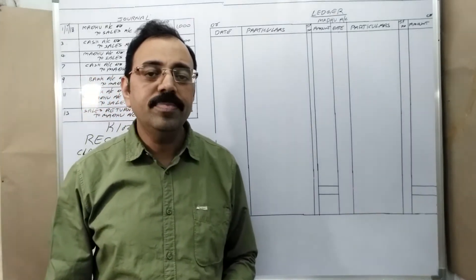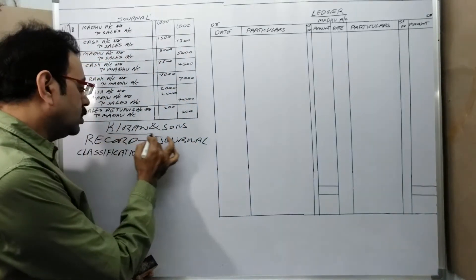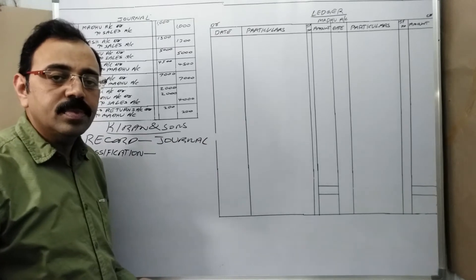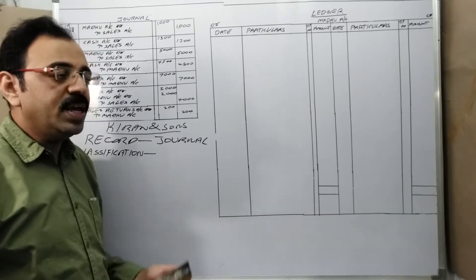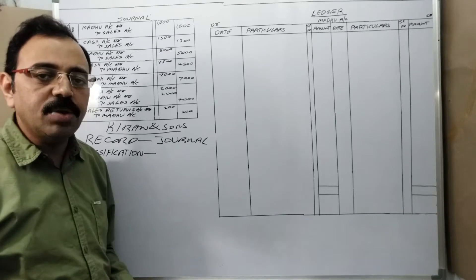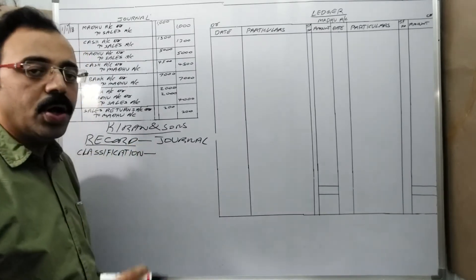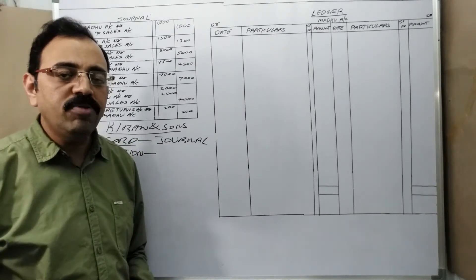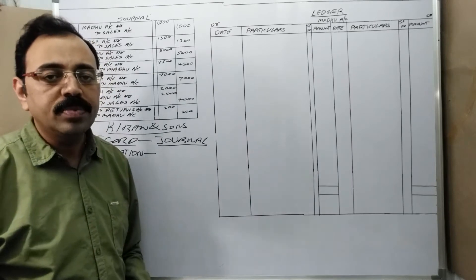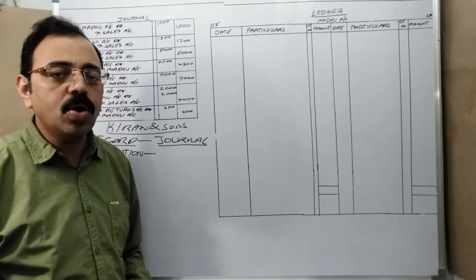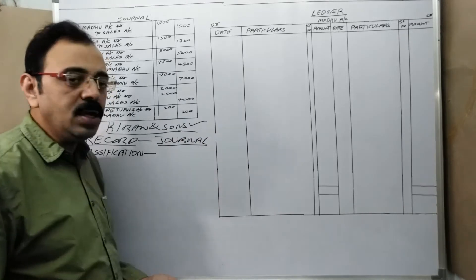Hi friends. Today I am going to explain about Ledger. Kiran and his sons is a firm and they want to maintain accounts. The first step is: if there is any financial business transaction in the firm, they should record it. Small firms record business transactions in a journal book, and large scale organizations record them in subsidiary books. Assume that Kiran and Sons is maintaining a journal book.